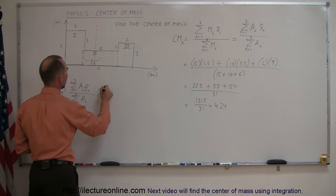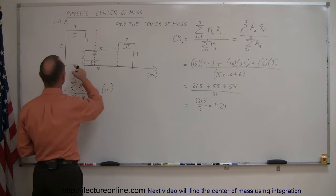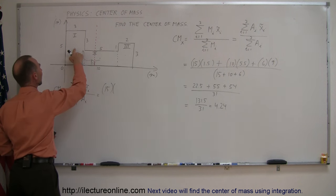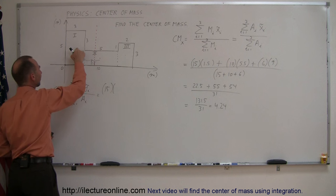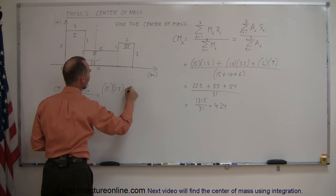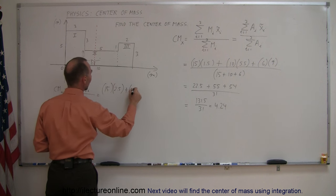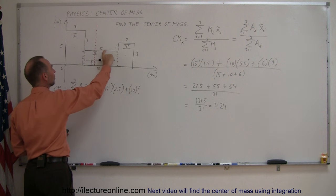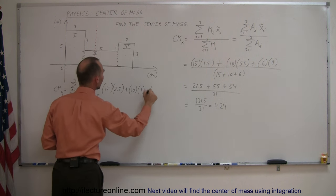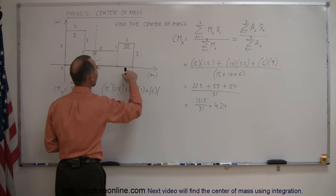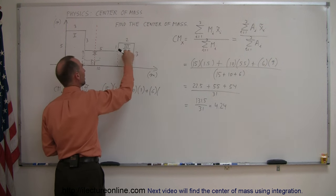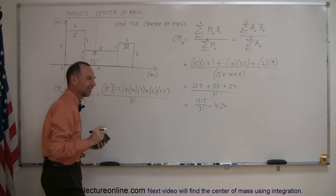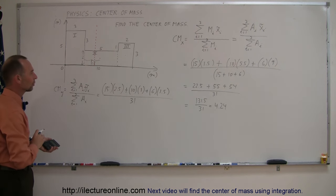So the area of the first piece is again 15. The y-coordinate of its center of mass is halfway from 0 to 5, which is 2.5 meters. So 15 times 2.5. Plus the area of the second piece, which is 10, times the y-location of its center of mass — halfway of 2 is 1 — so 10 times 1. Plus the area of the third piece, which is 6, times its center of mass: halfway from 0 to 3 is 1.5. Divide the whole thing by the sum of all their areas, which we already know is 31.